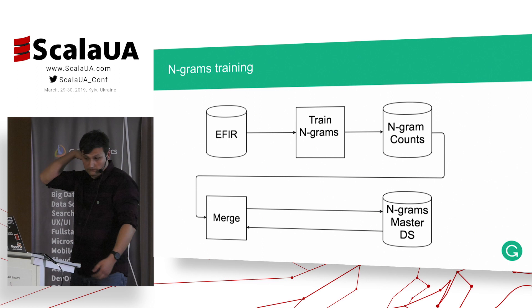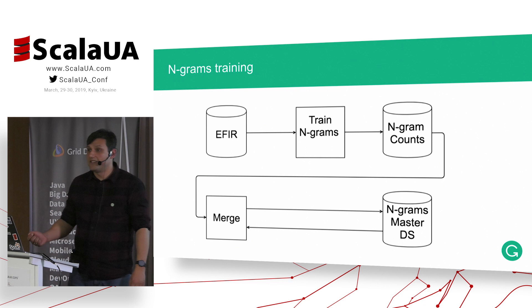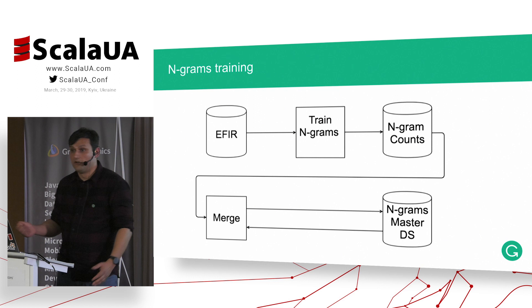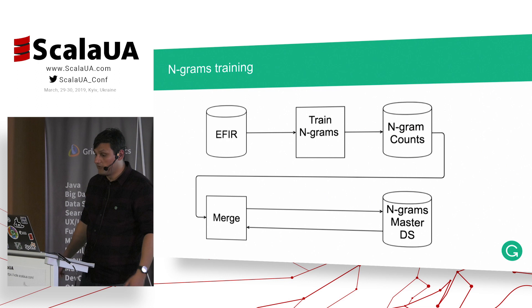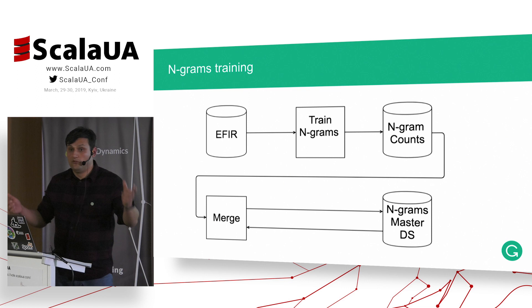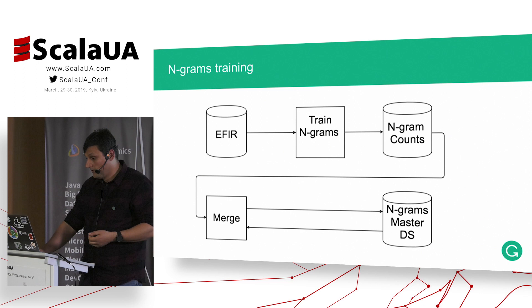The next thing we do is get this data and do the actual training, which is very simple — it may be considered the most trivial supervised learning algorithm. Then we merge this into a large n-gram dataset we call the n-gram master dataset. The merge is actually trivial: you get a key and sum the values. It's linear, and there is a huge advantage to being linear — if your function is linear, it makes your life simpler.